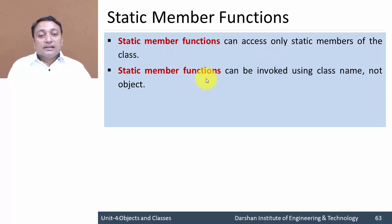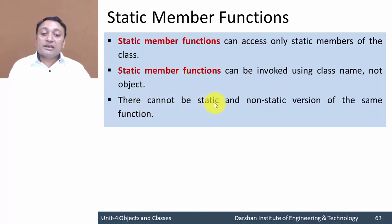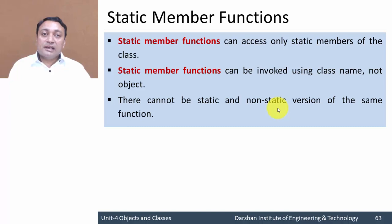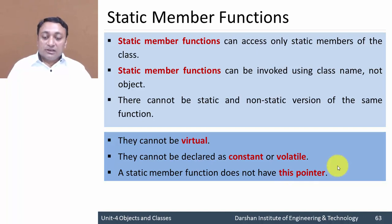Next let us discuss static member functions. Static member functions can access only static members of the class, and they can be invoked using the class name, not an object — so there is no need to create an object to call static member functions. We can use them to initialize static data members before creating any object. There cannot be static and non-static versions of the same function. Also, a static member function cannot be virtual, cannot be declared as constant or volatile, and does not have a 'this' pointer.